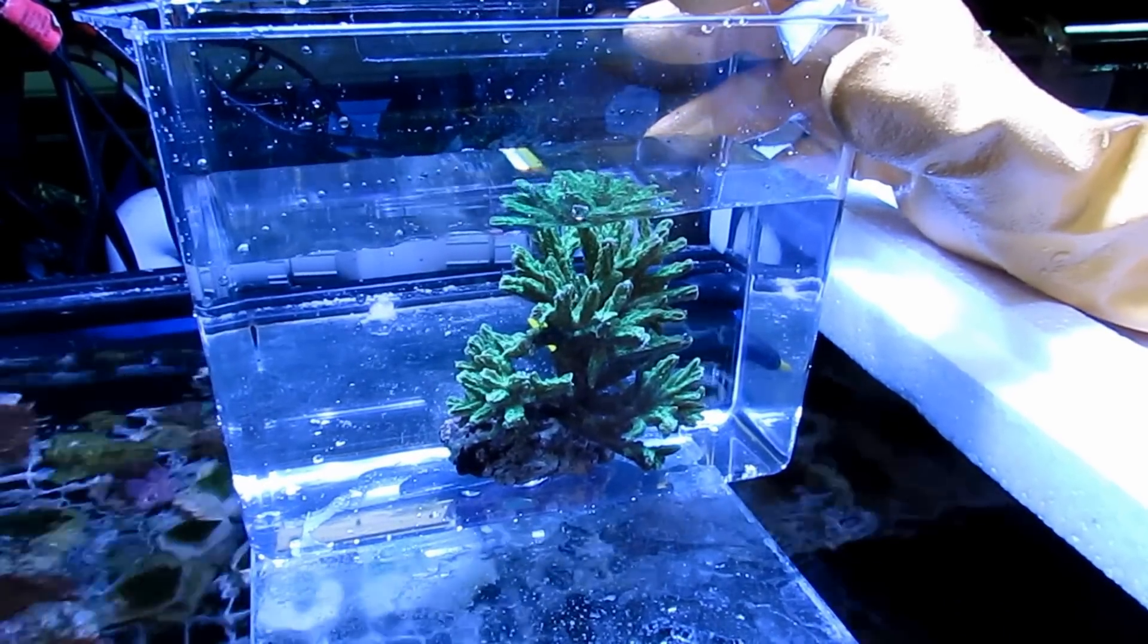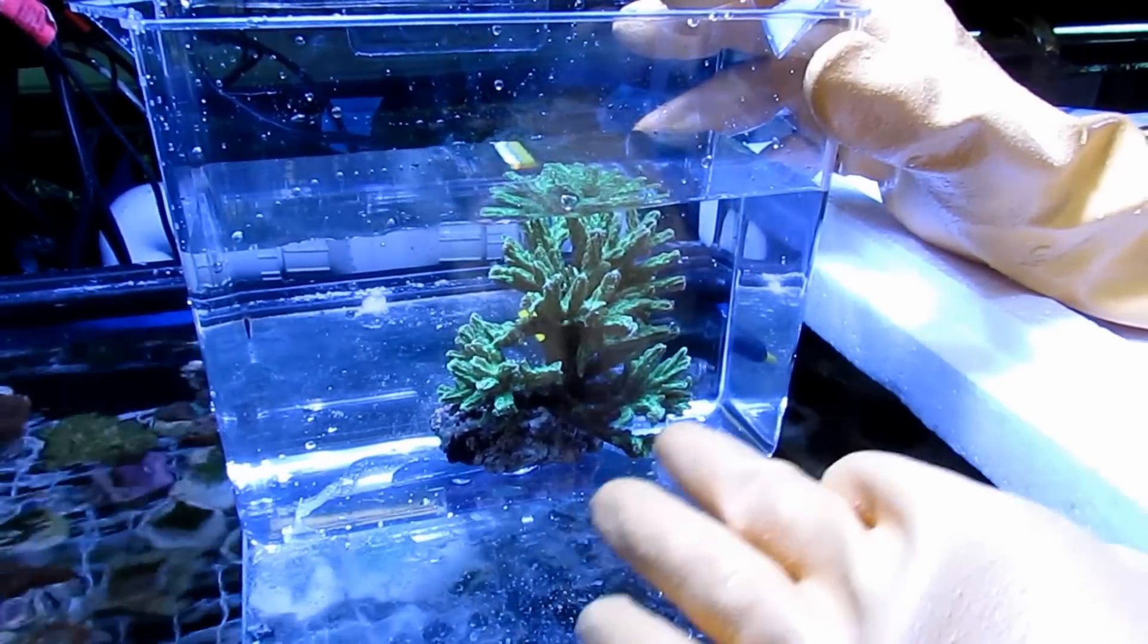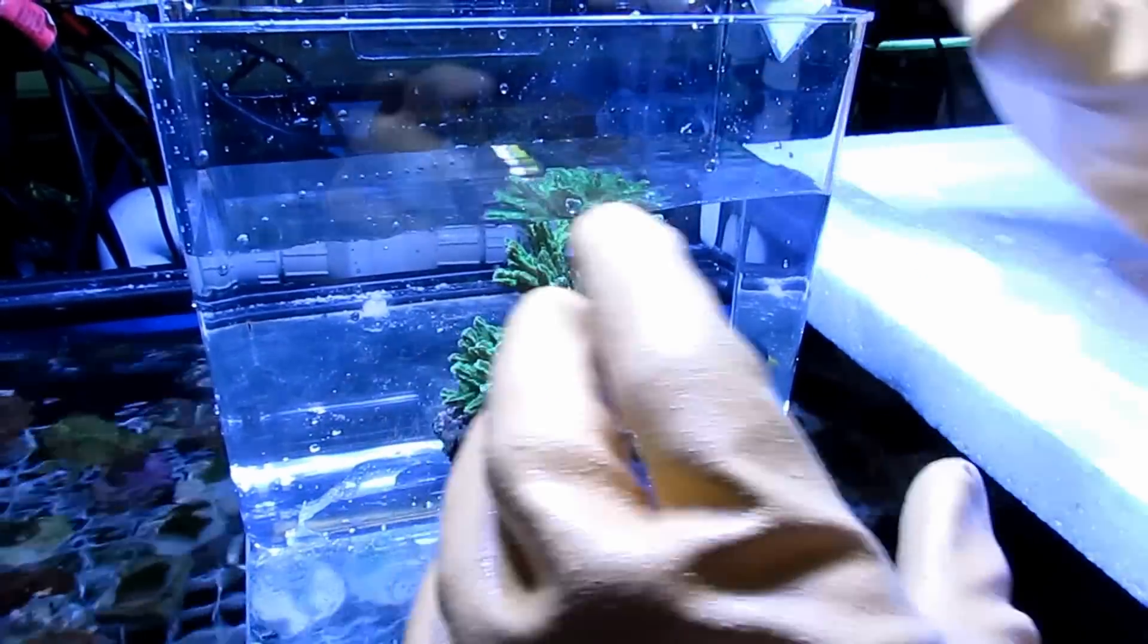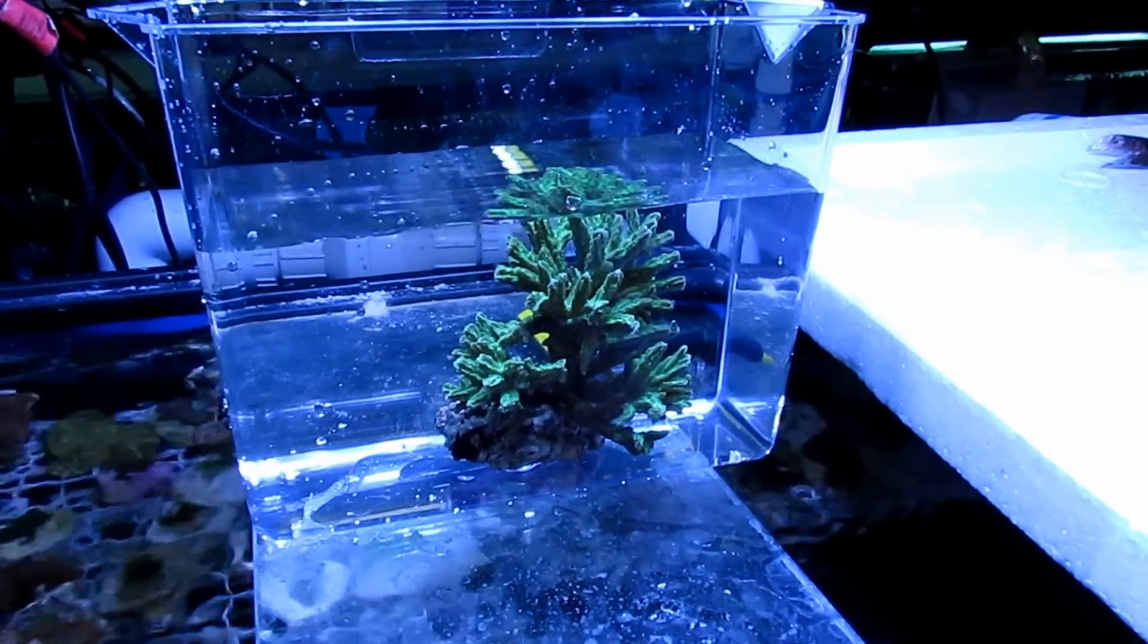This particular coral is called a Hydnophora, and it's a really pretty green one by the way. When I bought it, I actually had a choice between this one and a couple more solid pieces, but I figured I'd buy the one that I could easily cut frags off of.